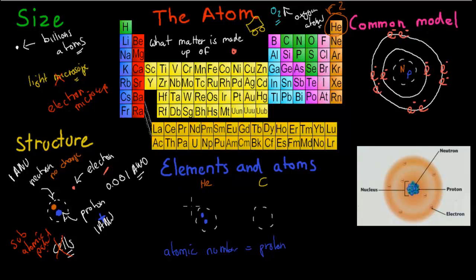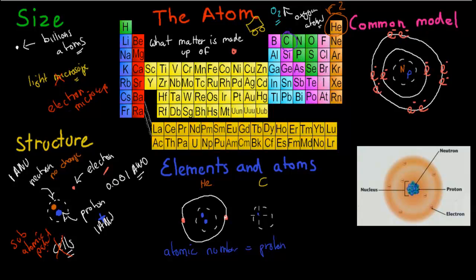And because helium is neutral — no overall charge — 2 positive will equal 2 negative, so it's going to have 2 electrons as well. So every helium atom will have 2 electrons and 2 protons. Carbon is here on the table with the atomic number of 6, which means it's going to have 6 protons in its nucleus — because atomic number equals protons — and 6 electrons surrounding the nucleus. 2 are going to be in the first shell and the other 4 in the second shell.